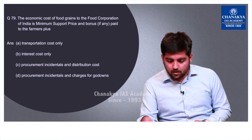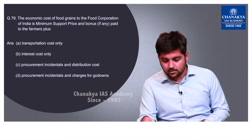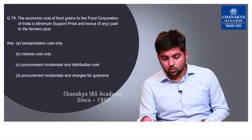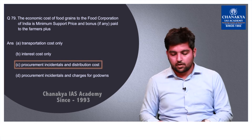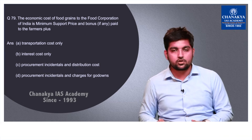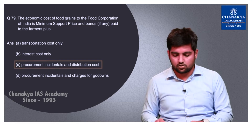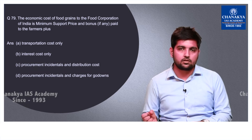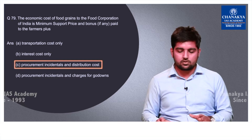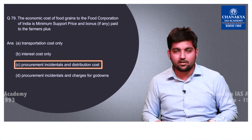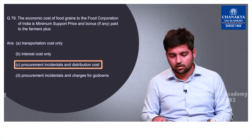Question number 79 asks about the economic cost of food grains to the Food Corporation of India (FCI). The correct option is C — it includes the minimum support price plus bonus paid to farmers, plus procurement incidentals and distribution cost. Going logically, there are procurement costs incurred during FCI's procurement across the country and distribution costs, so these two add up to the total cost. The correct option is C.